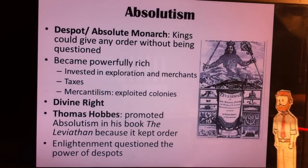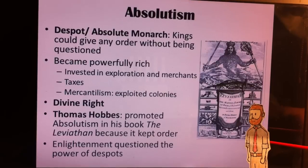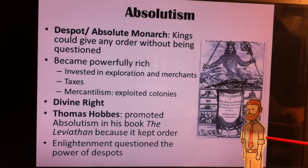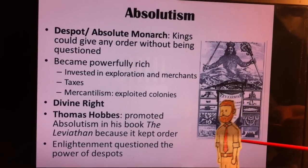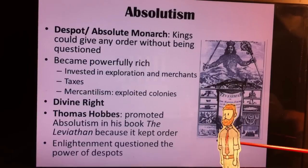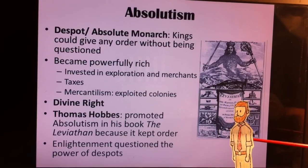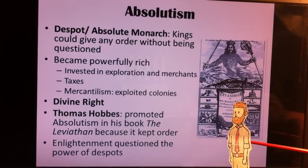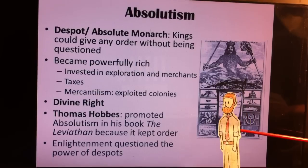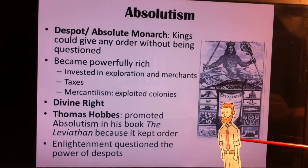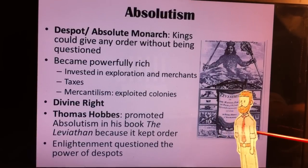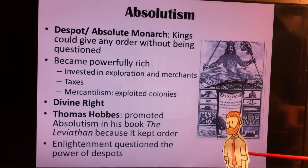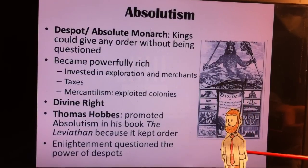A government system that existed was called absolutism or an absolute monarch. This is when a despot — the same thing as an absolute monarch — was a king that could basically do whatever he wants. He has complete control over society, and he really could not be questioned,